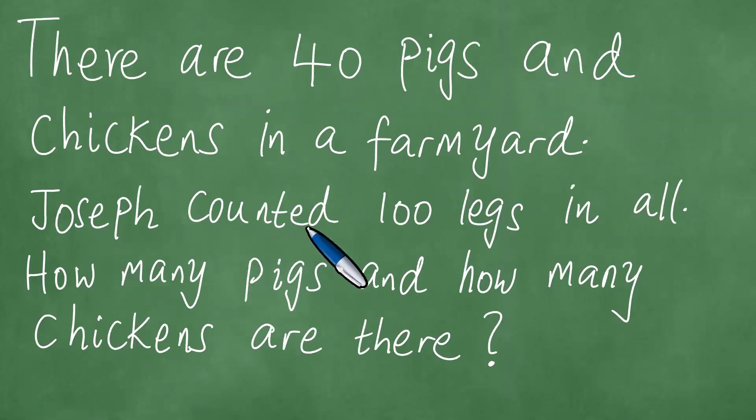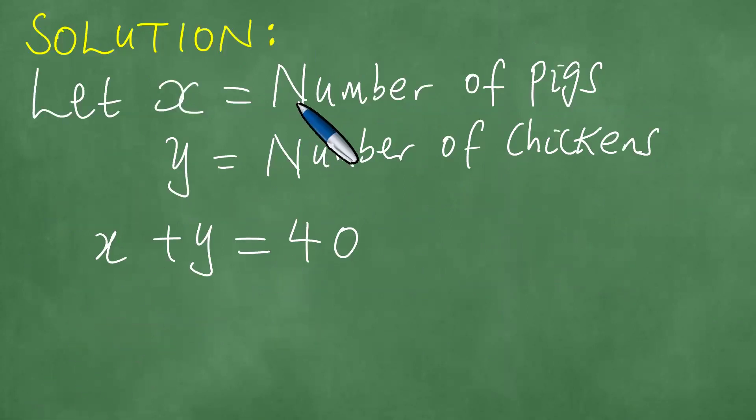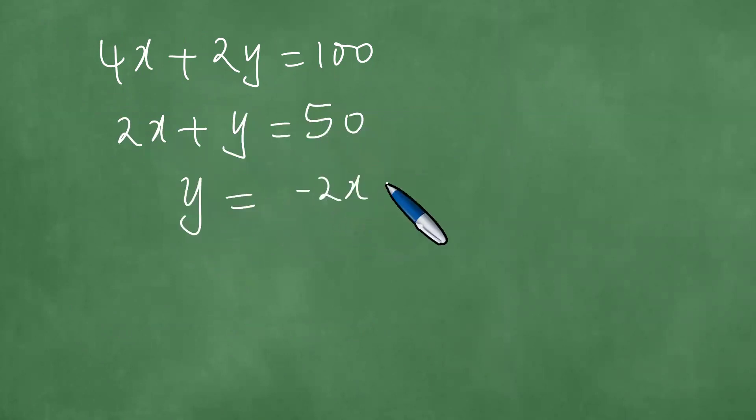Moreover, Joseph counted 100 legs in all. We know that each pig has four legs, so we have 4X plus each chicken has two legs and the result is 100. So we have 4X plus 2Y equals 100. Divide through by two, we have 2X plus Y equals 50, and Y then equals minus 2X plus 50.